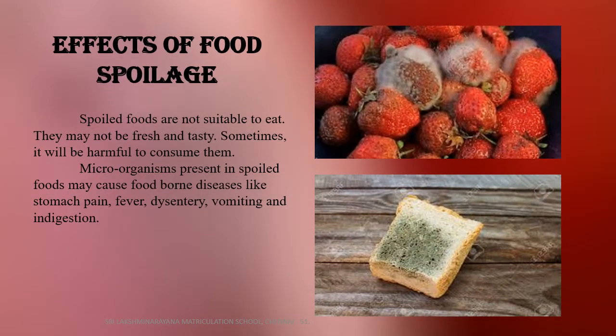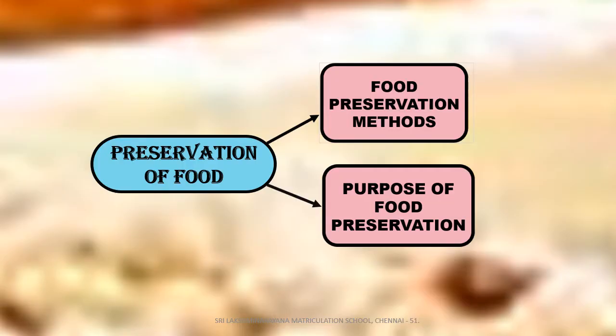Effects of food spoilage: spoiled food is not suitable to eat. What happens to bread if we keep it for a long time? The color of bread will become green because fungus will form on it. It will be harmful to consume. Because of microorganisms present in spoiled food, we get foodborne diseases like stomach pain, fever, dysentery, vomiting and indigestion.